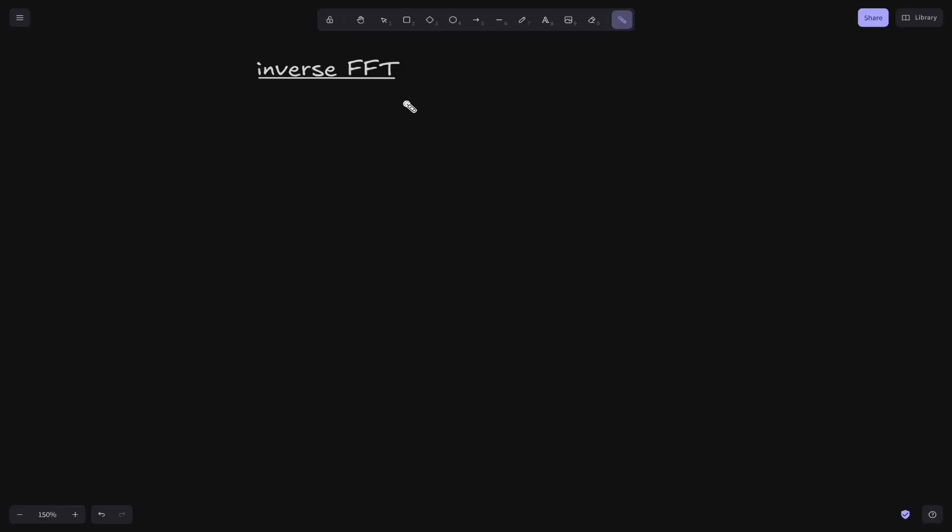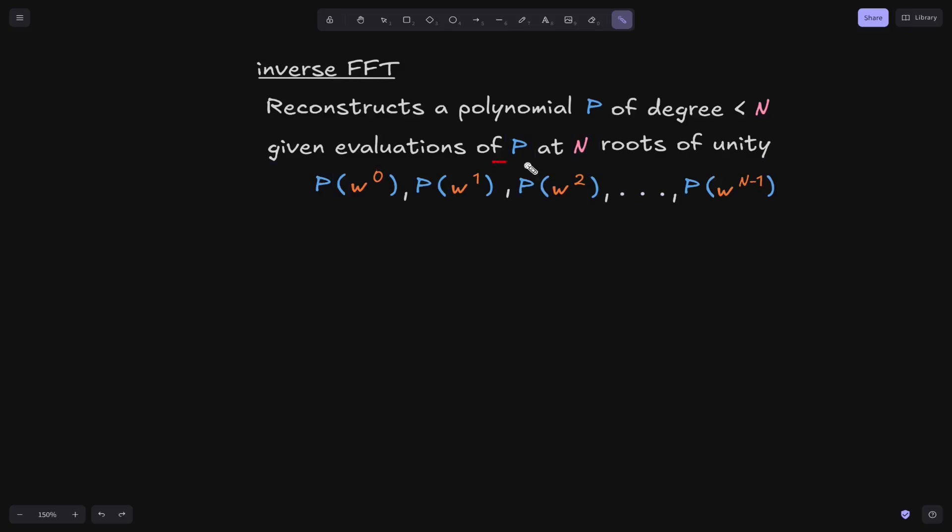Well, it turns out that the reverse operation is polynomial interpolation. Polynomial interpolation means that given some evaluation points of a polynomial, we can reconstruct the polynomial. So the inverse FFT will reconstruct the polynomial of degree less than N given evaluation of the polynomial at N roots of unity. The runtime will be the same as FFT.